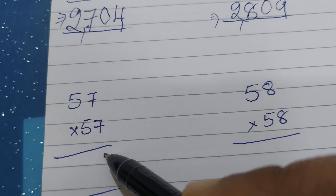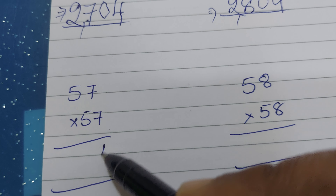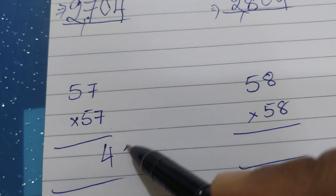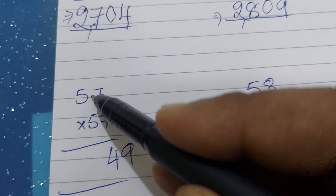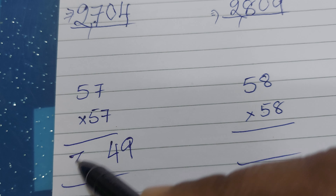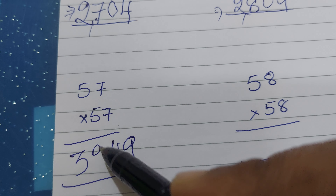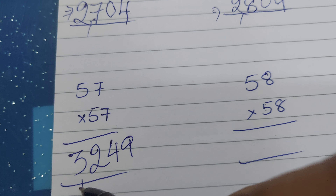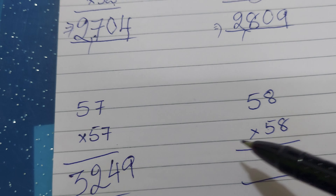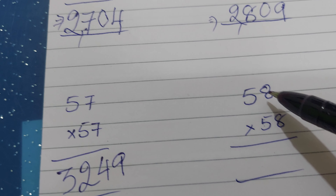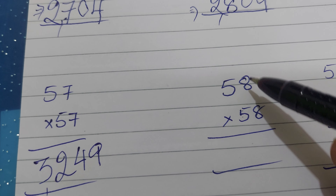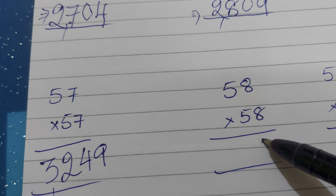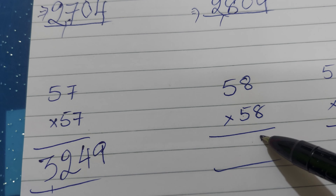Now 57 whole square — 57 into 57. Apply the formula: 7 into 7 is 49, write 49. Then 25 plus 7 equals 32. So the answer for 57 squared is 3249.